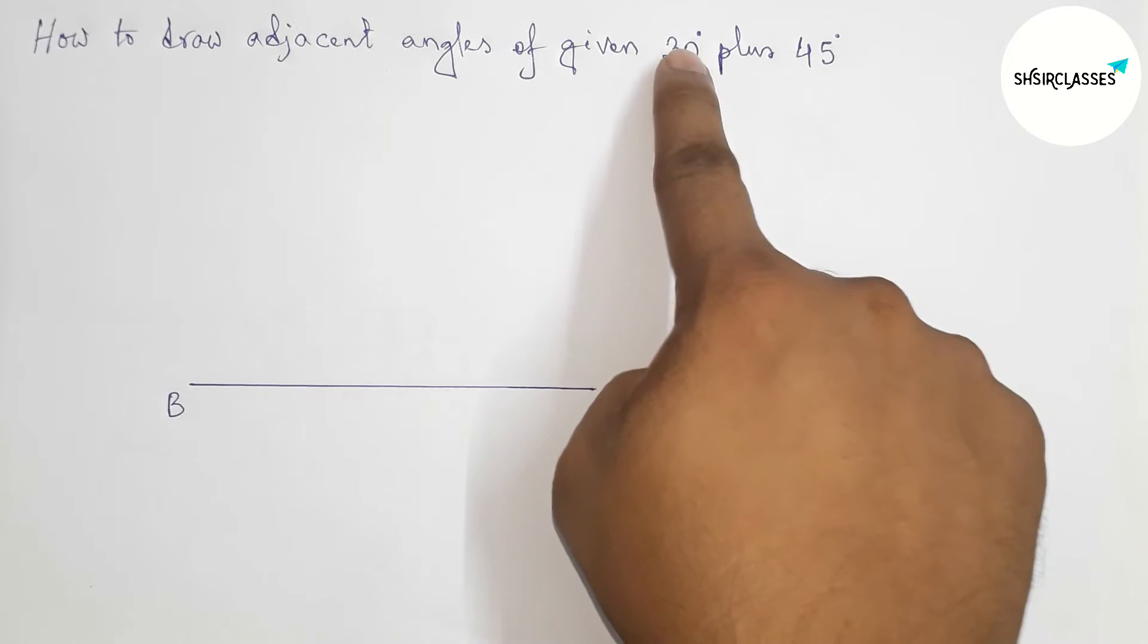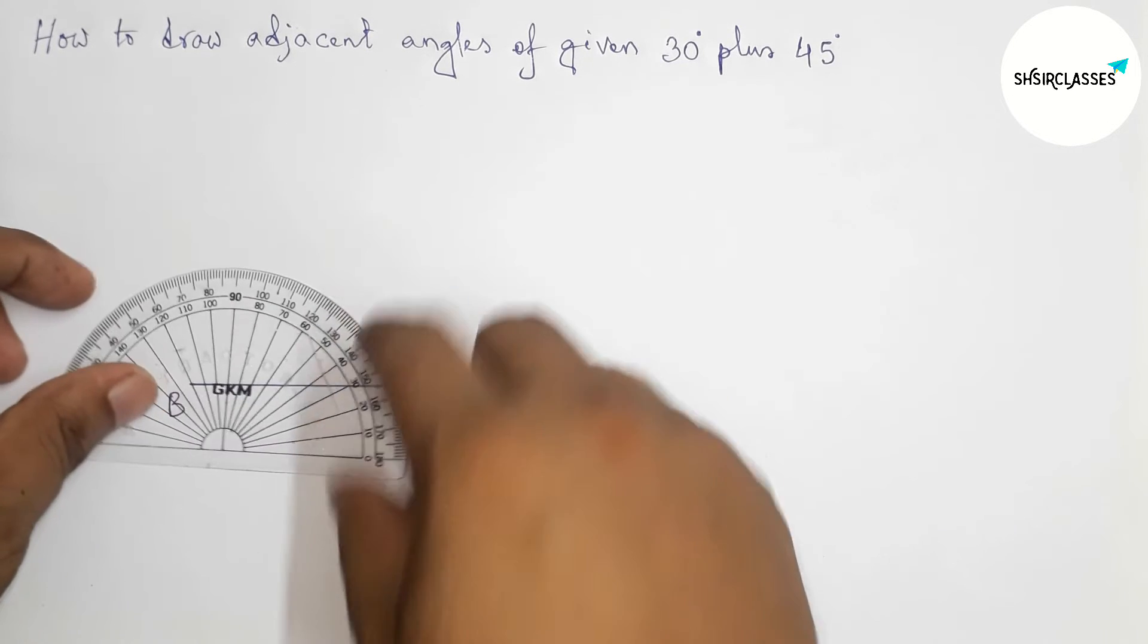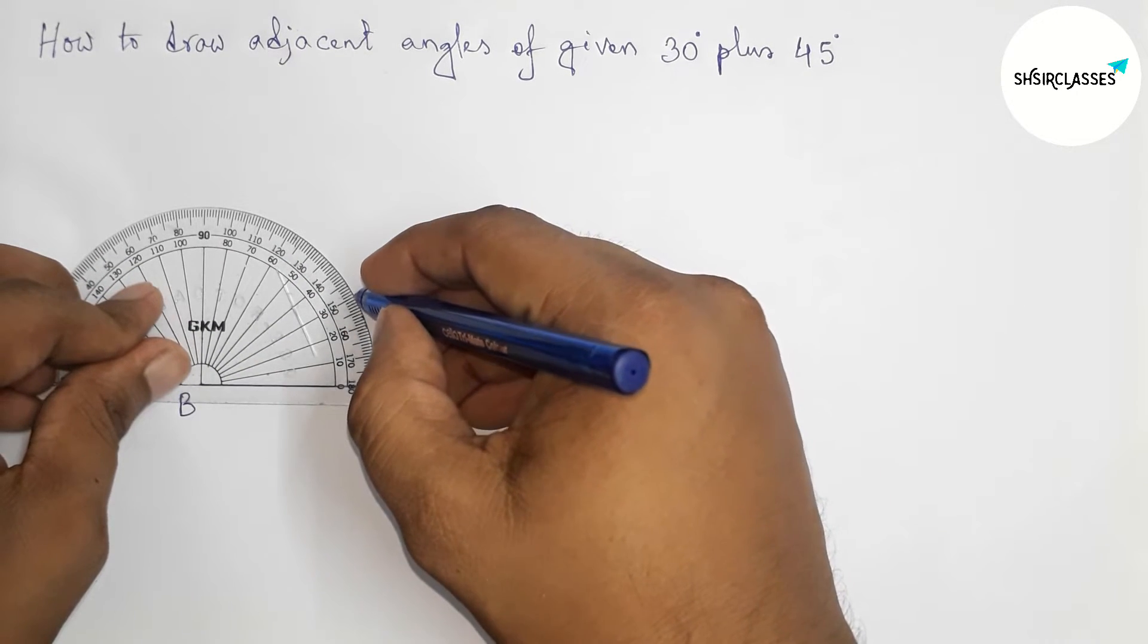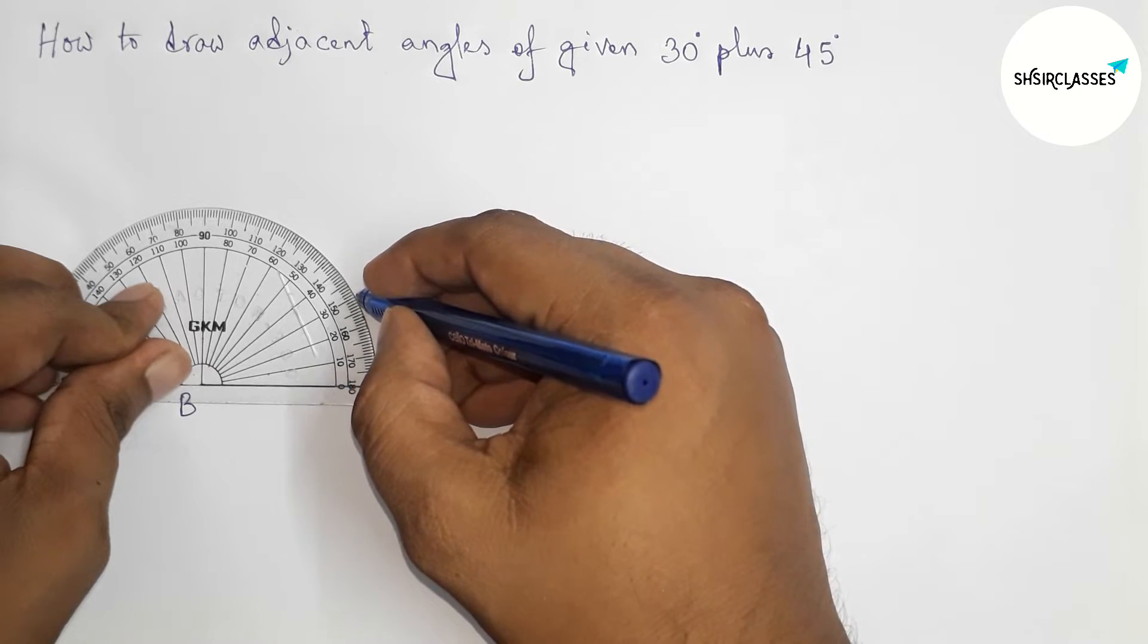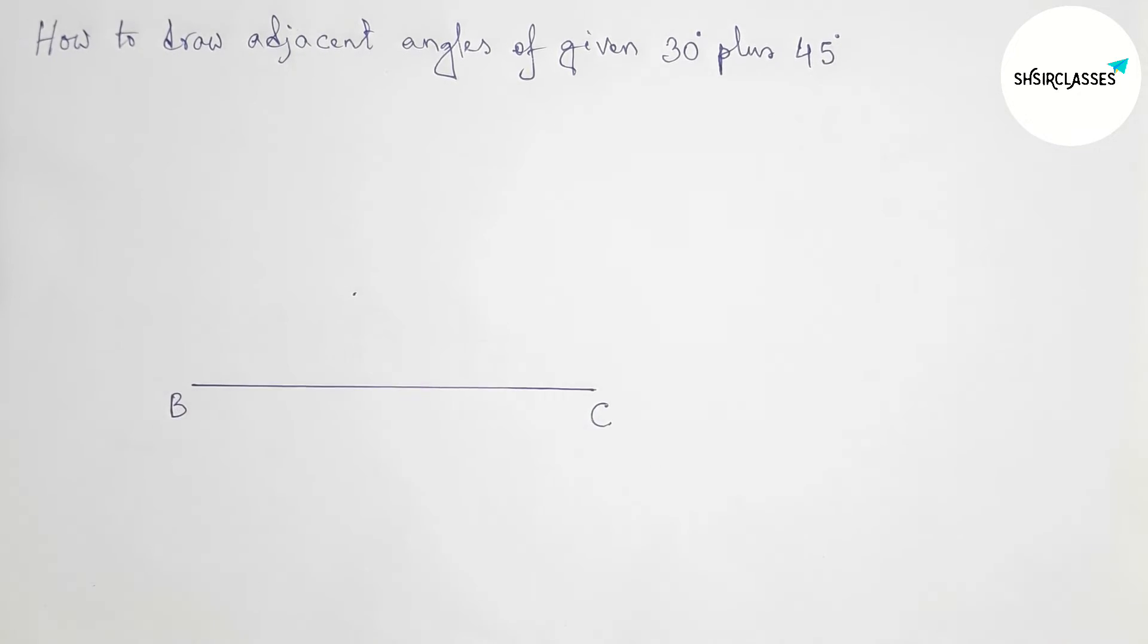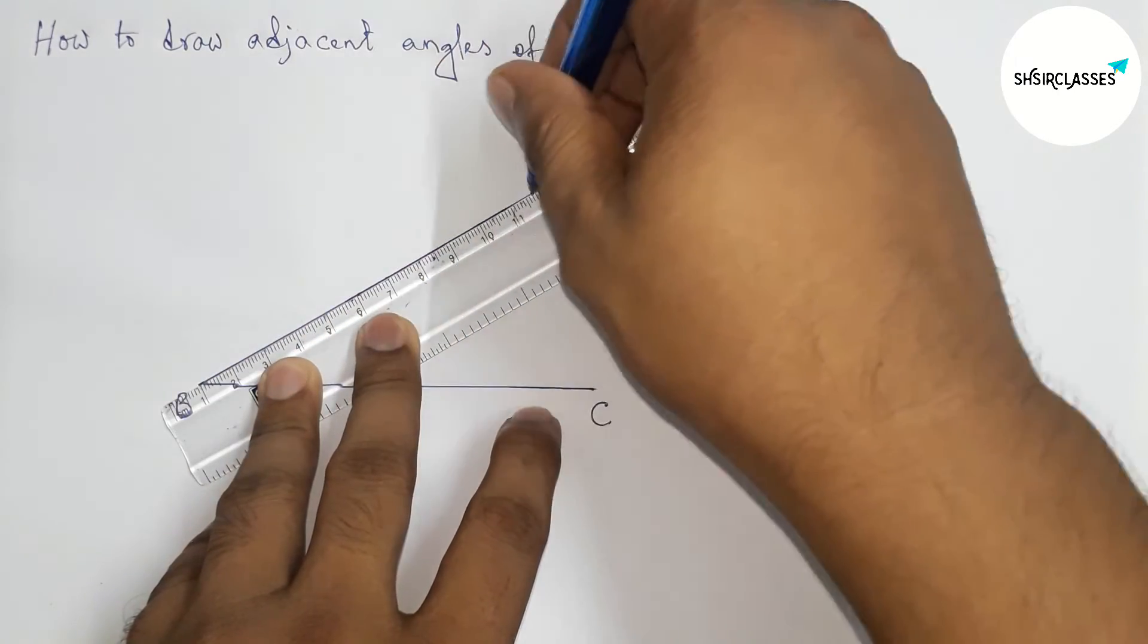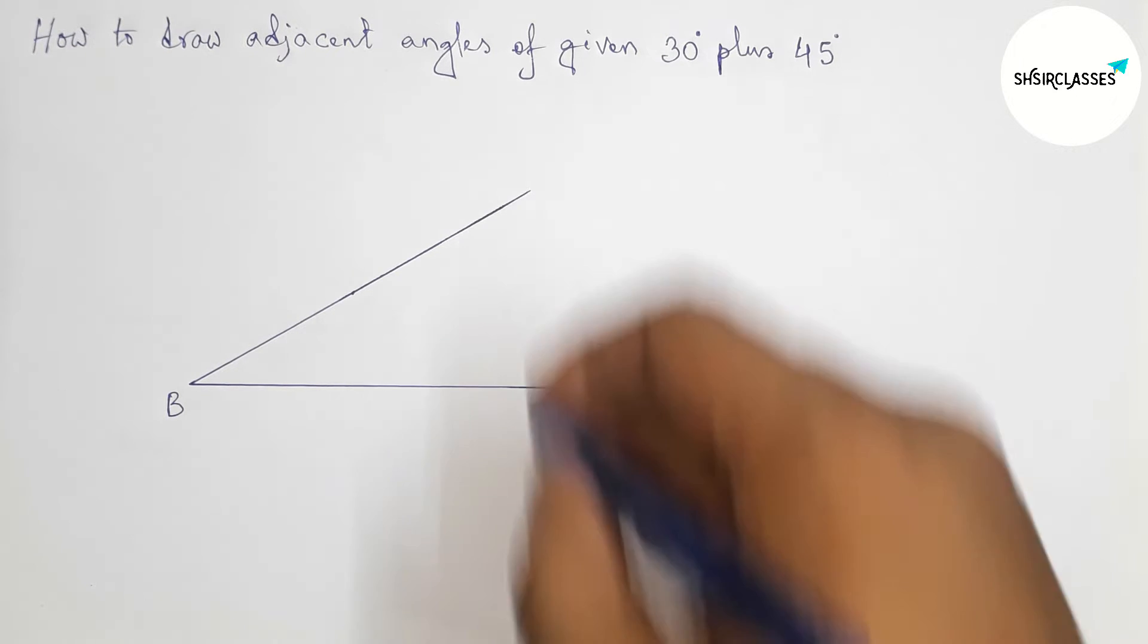So putting the protractor and counting 30 degrees, so first marking here. So this is 30 degree angle, okay. Next joining this to get 30 degree angle first, okay. So now labeling here point A.